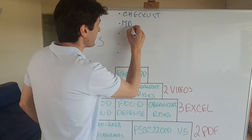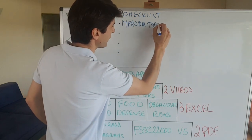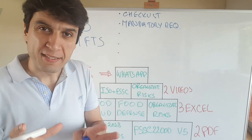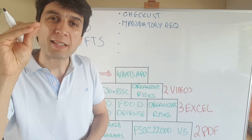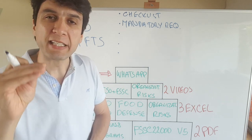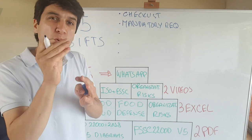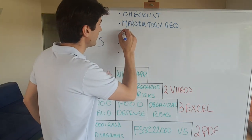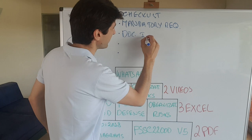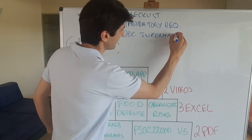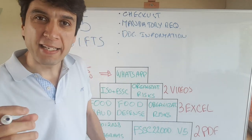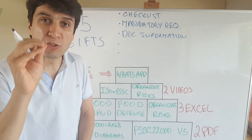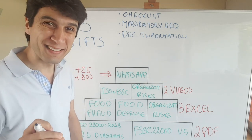Second gift: mandatory requirements. This is a PDF where you get, clause by clause, what the mandatory requirements are included in each clause — very easy for you to know exactly what you have to implement. And not only that, I also included documented information requirements, so you can get a list for each clause of what documented information is required — so you don't miss anything when you are being audited.